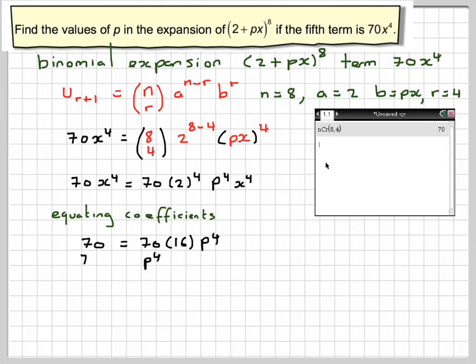Now to find p to the 4, we make p to the 4 the subject. So 70 over 70 times 16, cancel out the 70s and we've got that p to the 4 is equal to 1 over 16. So to find p, we need to find the 4th root of 1 over 16, which is plus or minus 1 half.